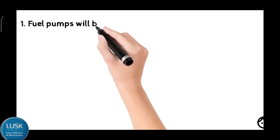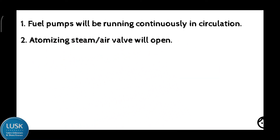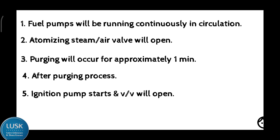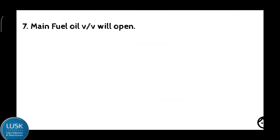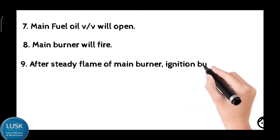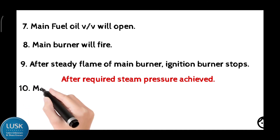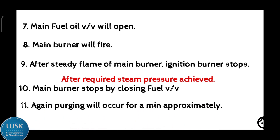Let's see the boiler firing sequence in a very fast manner. First, fuel oil pumps will be running continuously. Then automation steam valve will open, or compressed air valve will open for atomizing. Then purging will happen for one minute. After purging period completes, ignition burner pump will start and those two valves will open. Then pilot burner will start firing. Then there will be a flame sensor that will detect there is a flame inside the burner. Then main fuel oil valve will open. Then main burner will start firing because of the pilot burner, and the flame sensor will detect. Then as soon as there is a steady flame, ignition burner will stop. Then after achieving the required steam pressure, main burner will stop by closing the fuel valve, and purging will occur.